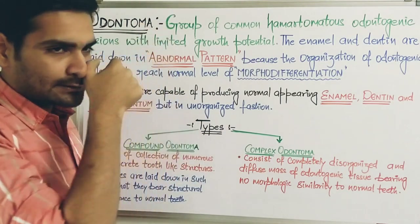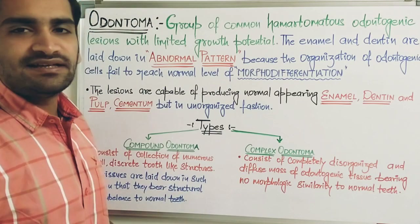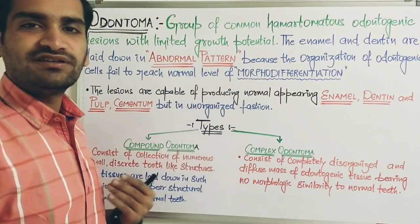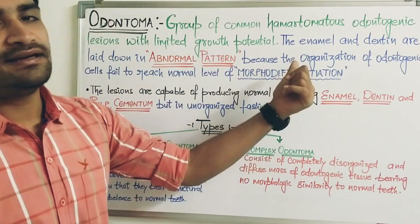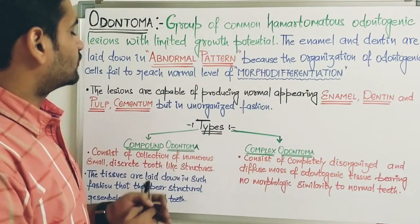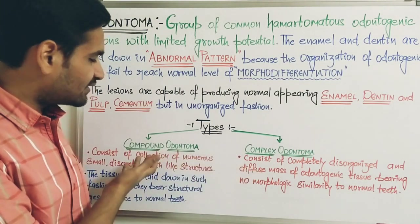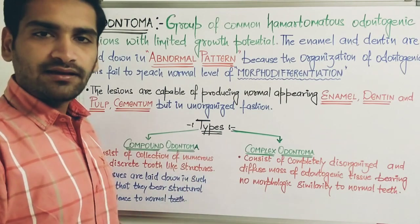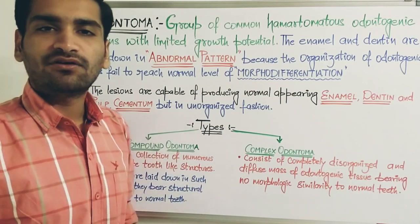To summarize: odontoma is a group of odontogenic lesions with limited growth potential. The cells of odontoma lay down in an abnormal pattern during morphodifferentiation — enamel, dentine, pulp, and cementum may be present — leading to this lesion. The two types to remember are compound and complex odontoma. Next we'll discuss clinical features, histology, radiology, and treatment.